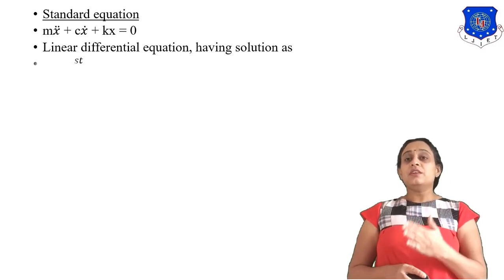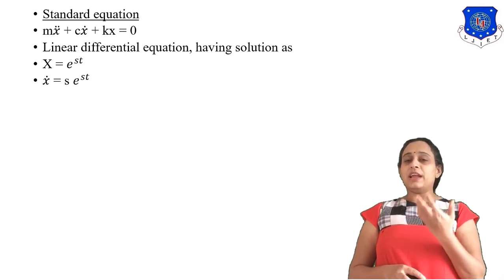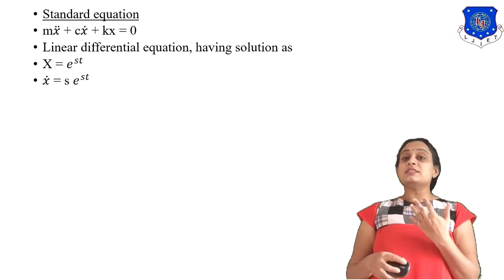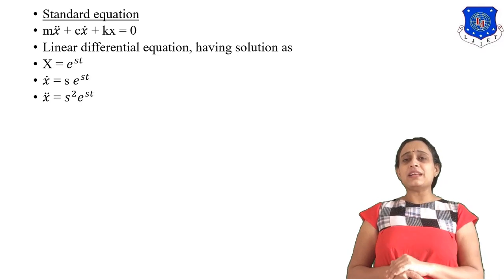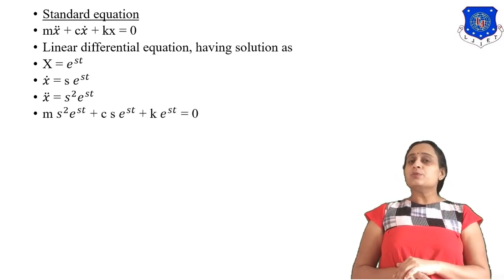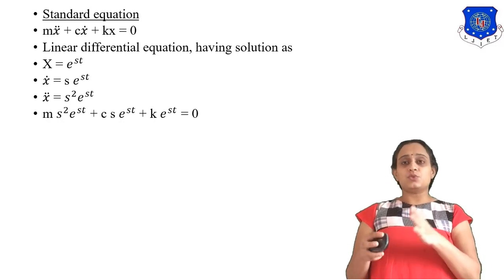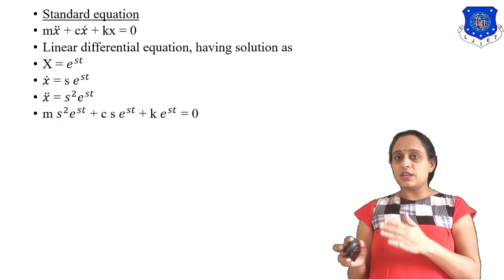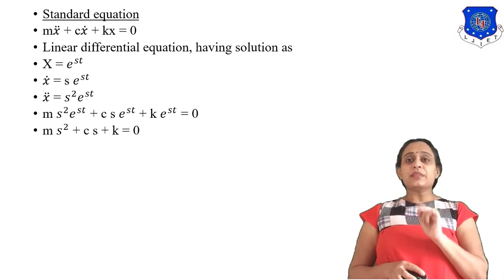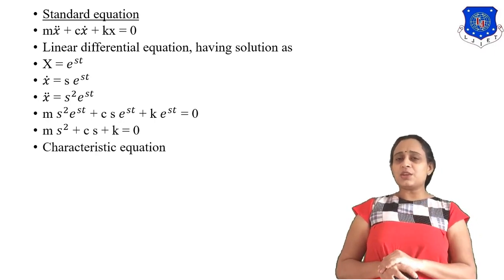To solve this equation, we assume x equals e raised to st. Differentiating: x-dot equals s·e^(st), and x double-dot equals s²·e^(st). Substituting into the standard equation gives: ms²·e^(st) plus cs·e^(st) plus k·e^(st) equals 0. Factoring out e^(st), which is non-zero, we get the characteristic equation: ms² plus cs plus k equals 0.